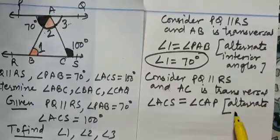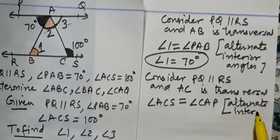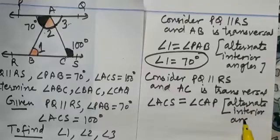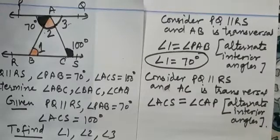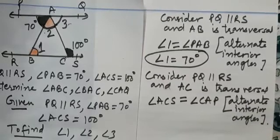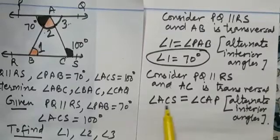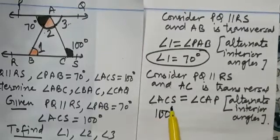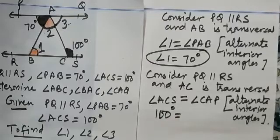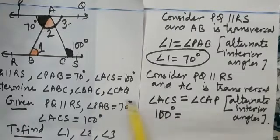So we are using the same result. When two parallel lines are cut by a transversal, then alternate interior angles are equal. Now, what is the measure of angle ACS? That is 100 degrees. So 100 degrees will be equal to angle CAP.